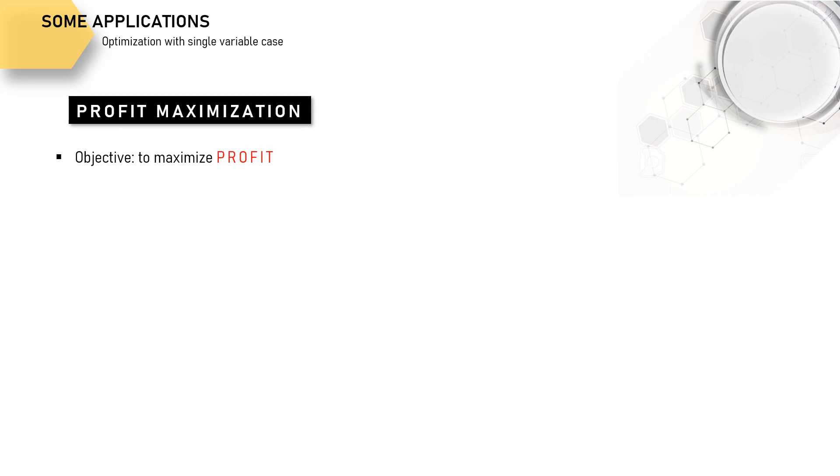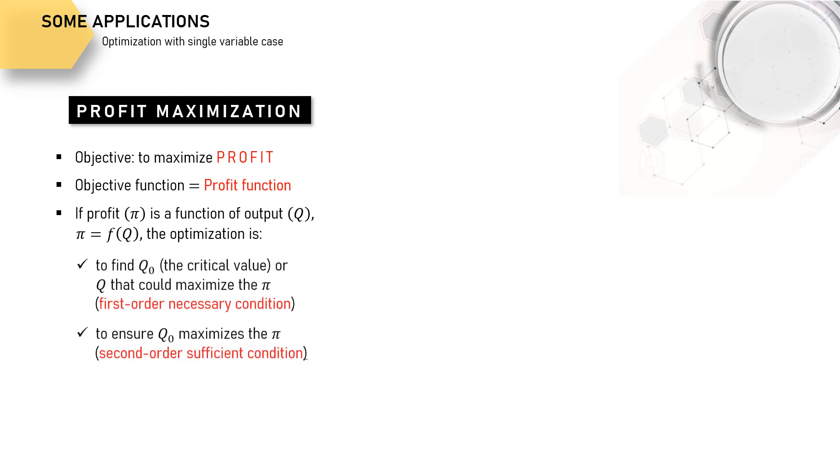Since profit is the objective, then profit function is our objective function. With profit only affected by output level, for instance, optimization will be about satisfying the first and second order condition.